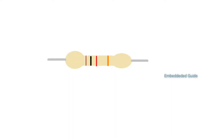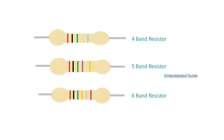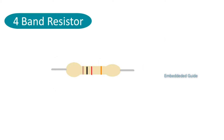We have different colors in this resistor — we have different color bands. There are 4-band, 5-band, or 6-band resistors. We have these color bands on the resistor. First, we have to find out the 4-band resistor value. Here we have a 4-band resistor with 4 color bands.